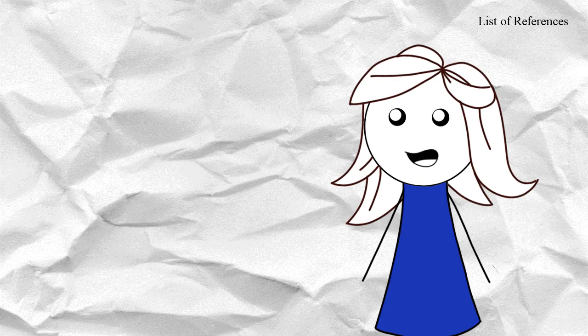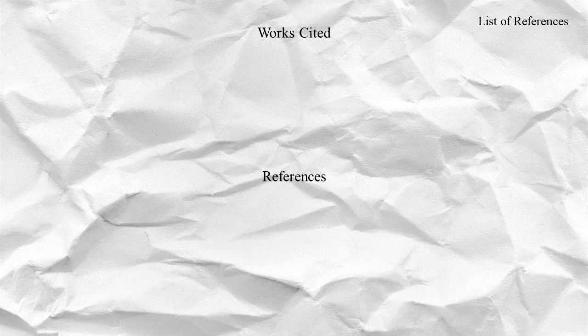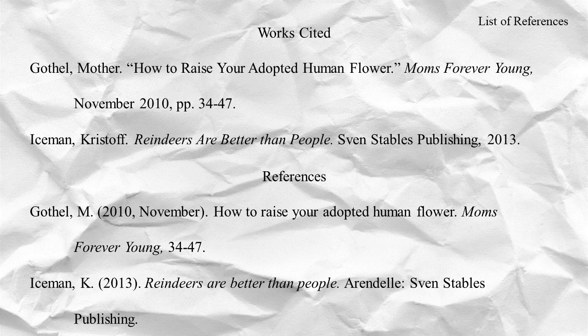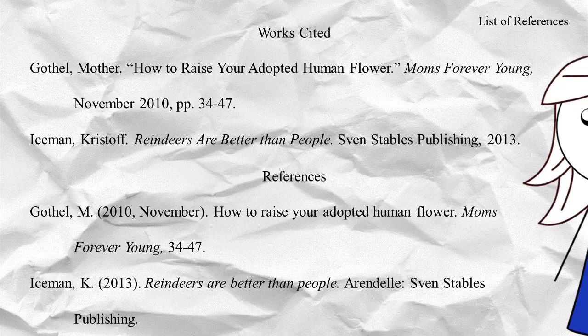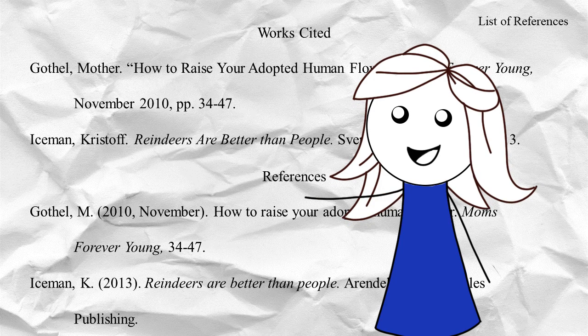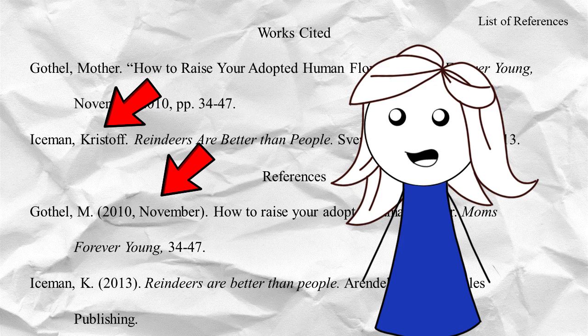Finally, the list of references at the end of the paper has several important similarities you should know about. The MLA list is called Works Cited; the APA list is called References. Both are in Times New Roman, size 12 font, and they're centered at the top of the page, not bolded or italicized. Everything is double-spaced, and every entry has a hanging indent. Alphabetize your sources by the author's last name, or the first important word in the title if you don't have an author. As you can see, there are a lot of differences in how to format MLA and APA reference pages, such as how to format names, where to put the date, and so on.